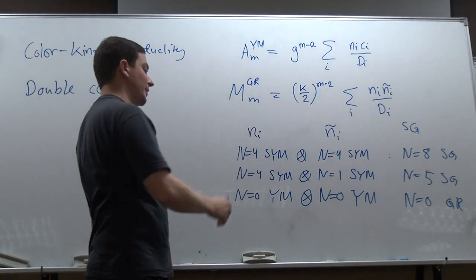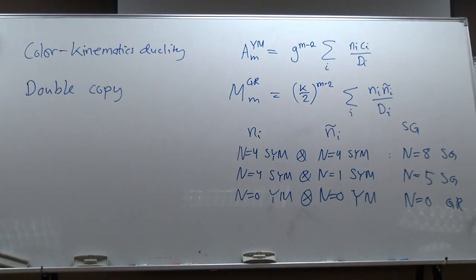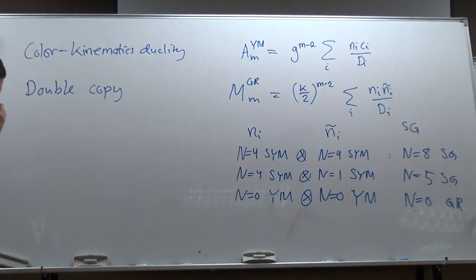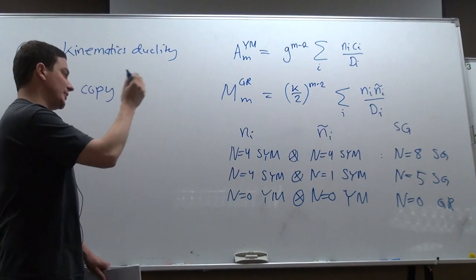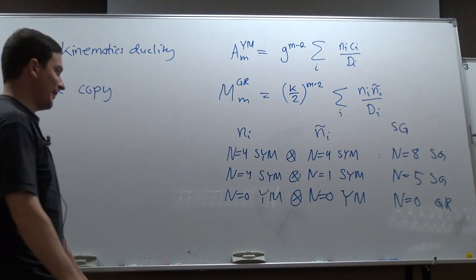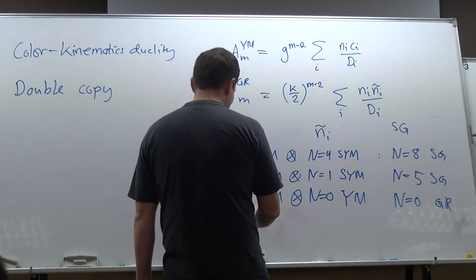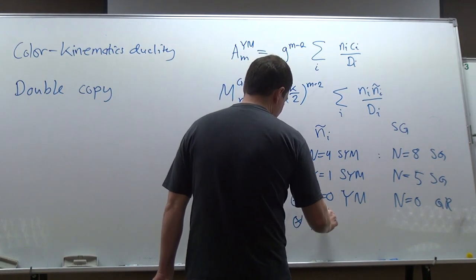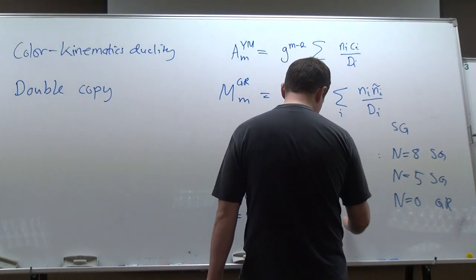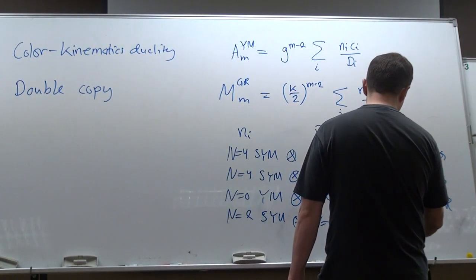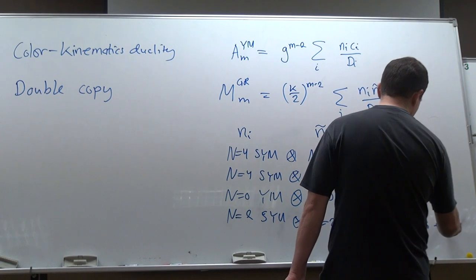We can already construct several different theories. You can ask whether this is a more general structure, since we can do it for more than one theory. But of course this set of theories is a very limited set of all possible supergravities. For instance, if you take N=2 and N=2, you get N=4, and it's not exactly the same as pure N=4 — you get N=4 super gravity plus matter.